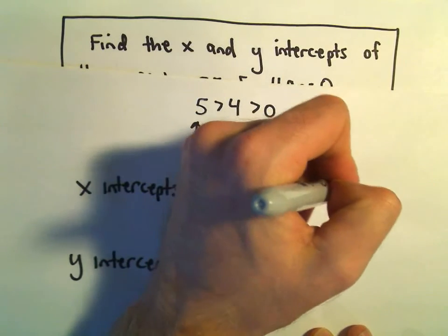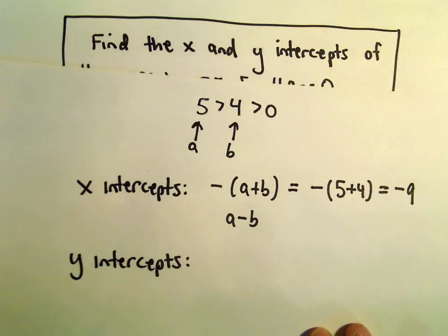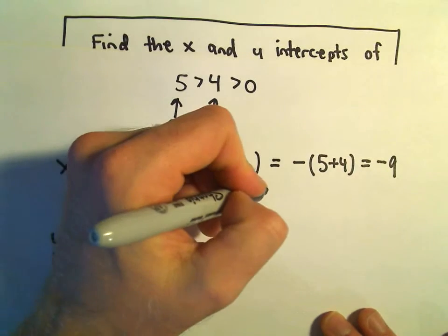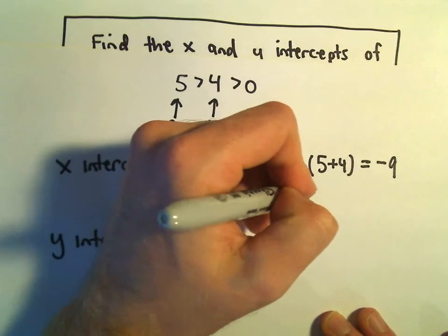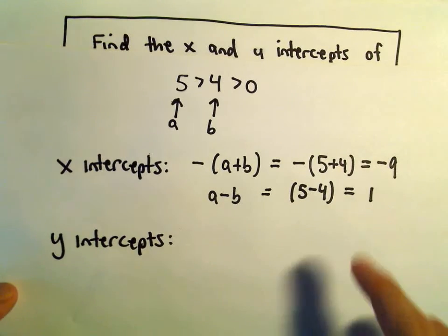So a plus b would just be 5 plus 4, which would give us negative 9. That's going to be one of our x-intercepts. If we do a minus b, that'll be 5 minus 4, or positive 1. So that'll be our other x-intercept.